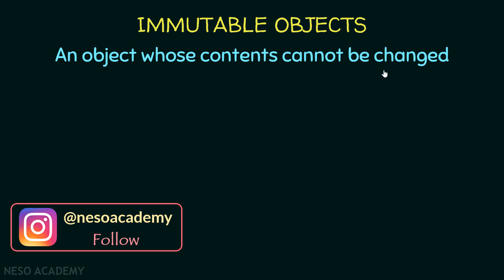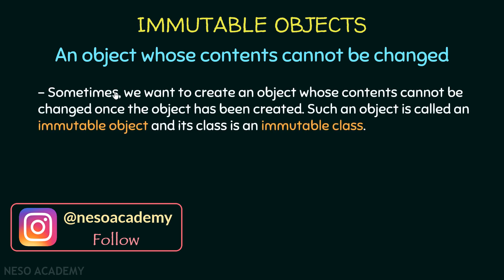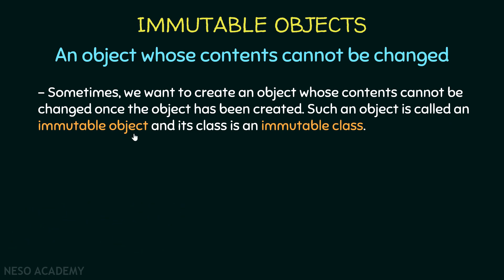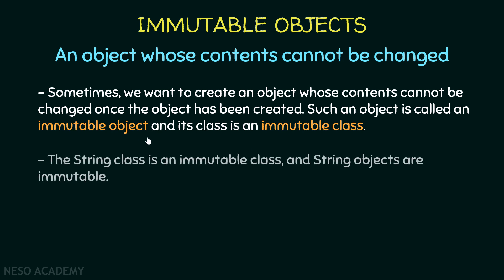In other words, the values of the data fields of an immutable object cannot be changed. Sometimes we want to create an object whose contents cannot be changed once the object has been created. Such an object is called an immutable object, and the class used to create this object is called an immutable class. For example, the String class is an immutable class and String objects are immutable objects.